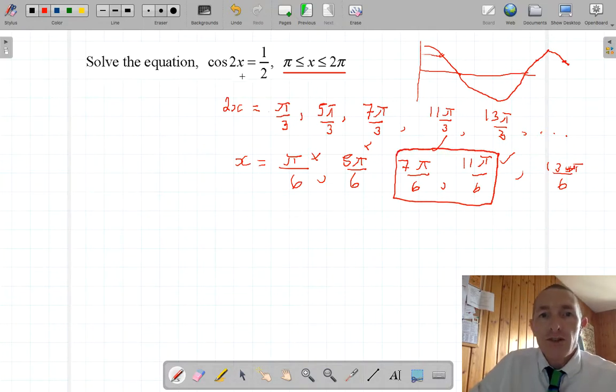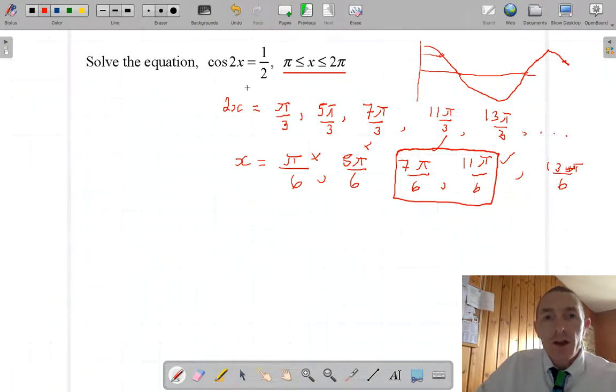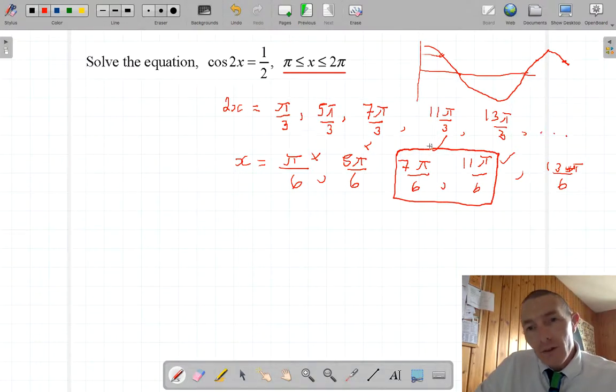So the trick to this question is get rid of the cosine, put down all the answers, and forget about the domain, and then worry about the domain on the final line when you divide.